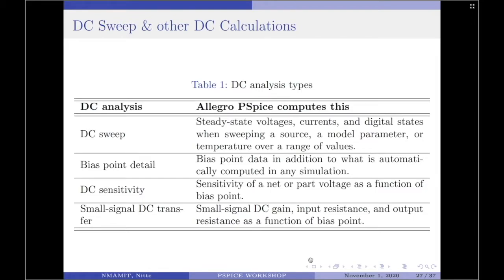DC sweep analysis evaluates circuit performance in response to a direct current source. Table 1 here summarizes what the Allegro PSPICE calculates for each DC analysis type. If the type of the DC analysis is DC sweep, then the Allegro PSPICE computes steady state voltages, currents, digital states when sweeping a source, model parameters, or temperature over a range of values.